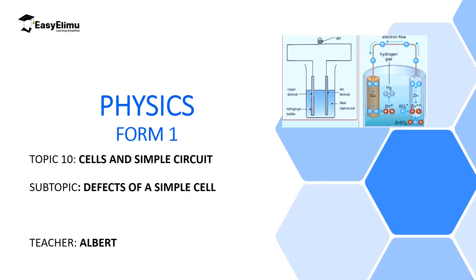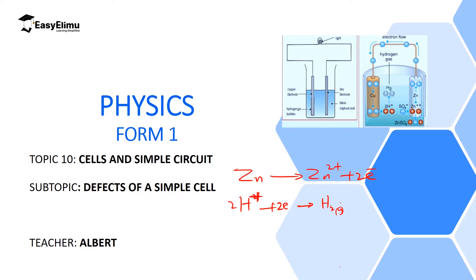Welcome to ECLIMU Learning Simplified. In the previous lesson we discussed how a simple cell utilizes a chemical reaction to produce electrical energy. With copper and zinc electrodes and dilute sulfuric acid as the electrolyte, zinc reacts with the acid to produce zinc ions plus two electrons, and those electrons react with hydrogen ions to generate hydrogen gas, which forms at the copper electrode.